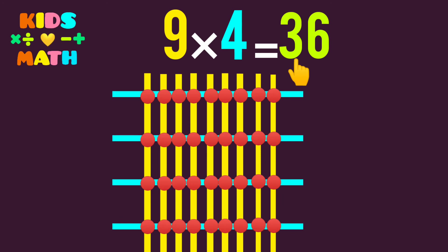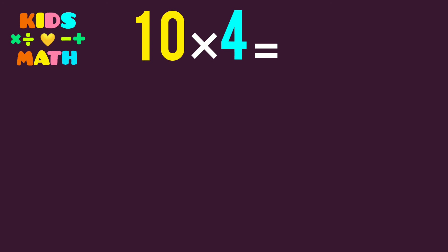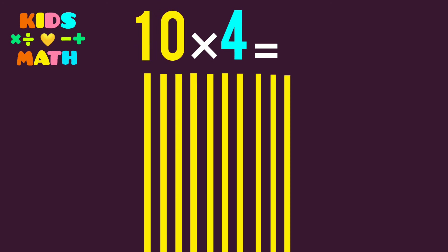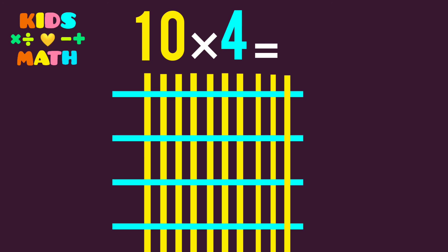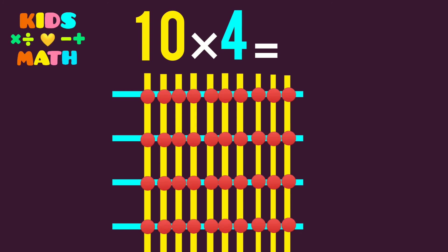The next: 10 times 4. The first number is 10, so we derive 10 lines. The second number is 4, so we derive 4 lines. Then we count the common points.